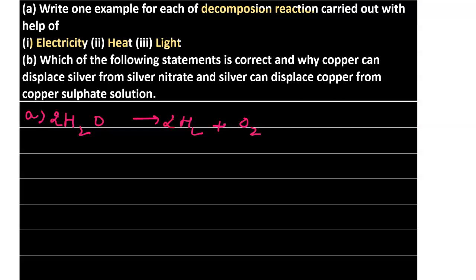For heat: calcium carbonate on heating (indicated by a triangle symbol) decomposes to give calcium oxide along with CO2. This is a classic example of thermal decomposition, where decomposition takes place in the presence of heat.